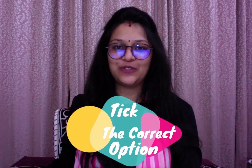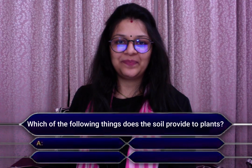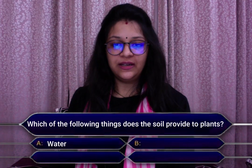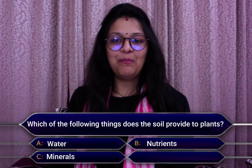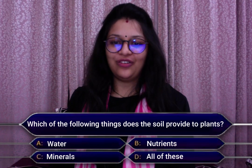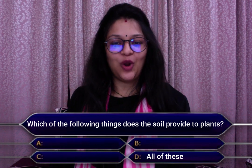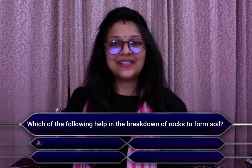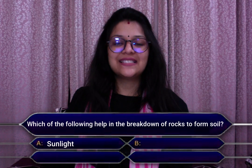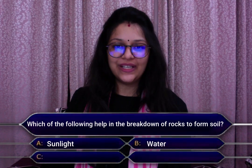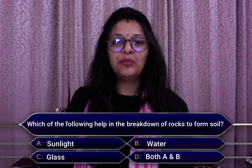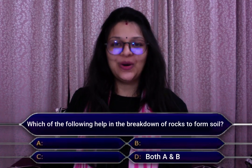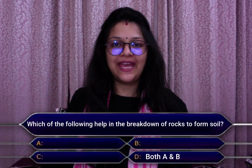Pick the correct option. First: which of the following things does soil provide to plants? A. Water, B. Nutrients, C. Minerals, D. All of these — the answer is D, all of these. Second: which of the following helps in the breakdown of rocks to form soil? A. Sunlight, B. Water, C. Glass, D. Both A and B — the answer is D, both A and B. Both sunlight and water help in the breakdown of rocks to form soil.